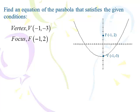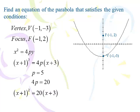This time we're given the vertex at (-1, 3) and the focus at (-1, 2). You know it's opening up because the parabola has to wrap its arms around the focus. The base equation is x squared equals 4py. So it becomes x plus 1 squared equals 4p times (y plus 3). p is 5 — that's the distance from the vertex to the focus — and 4 times 5 is 20. So x plus 1 squared equals 20 times (y plus 3).